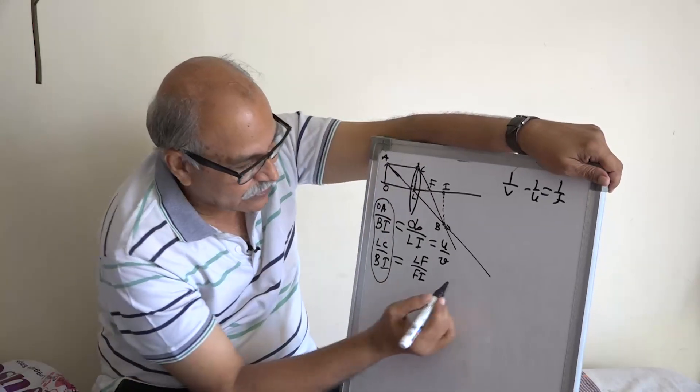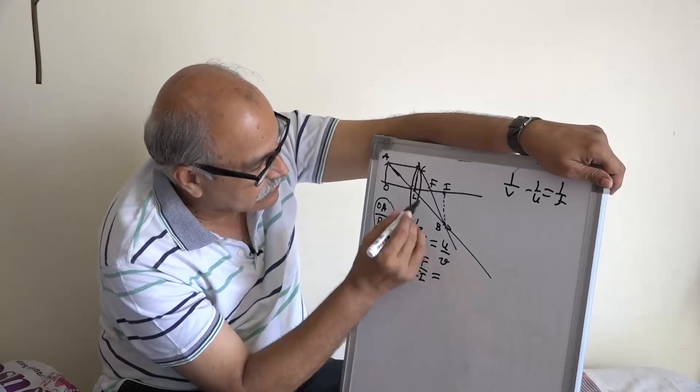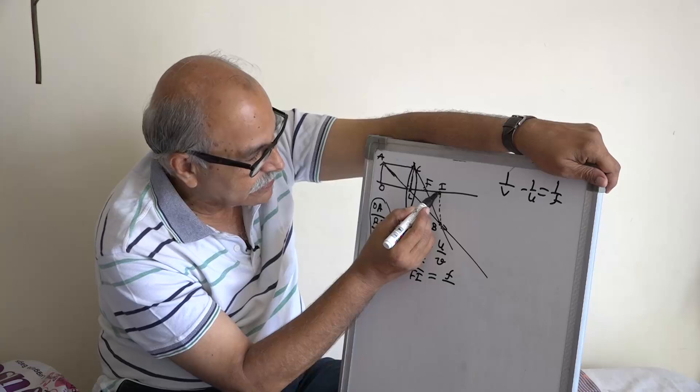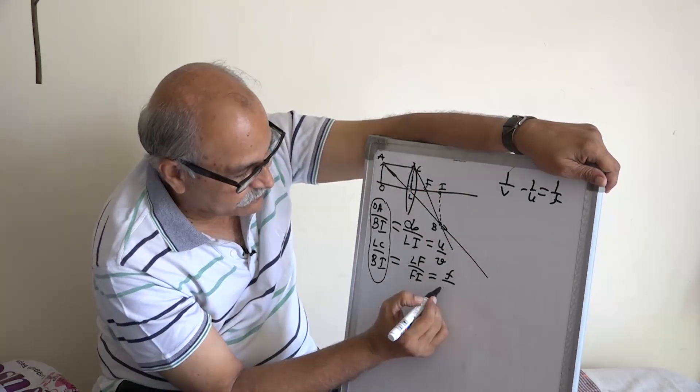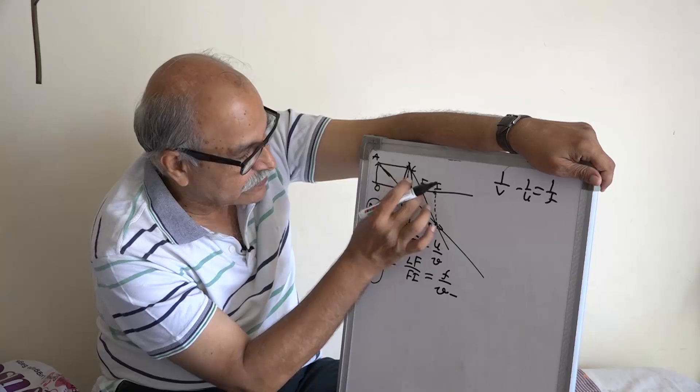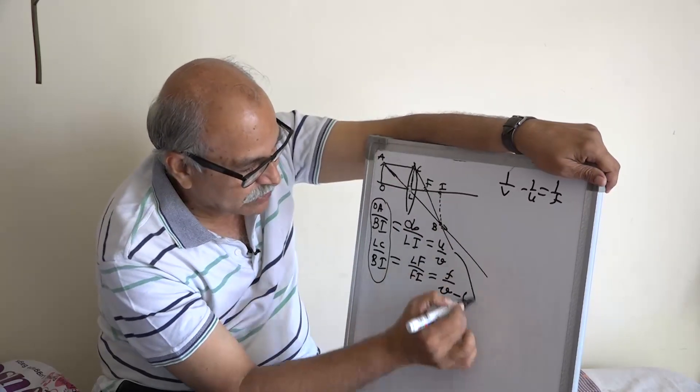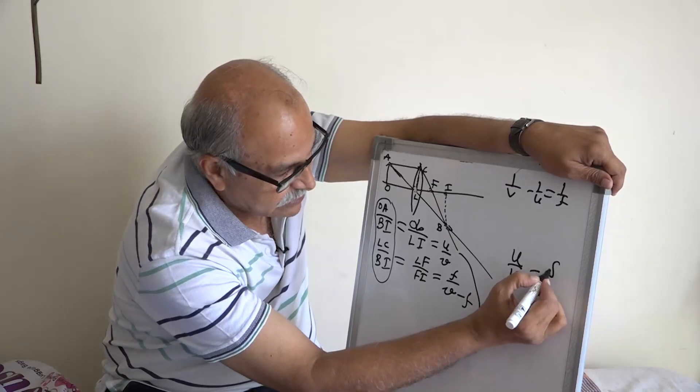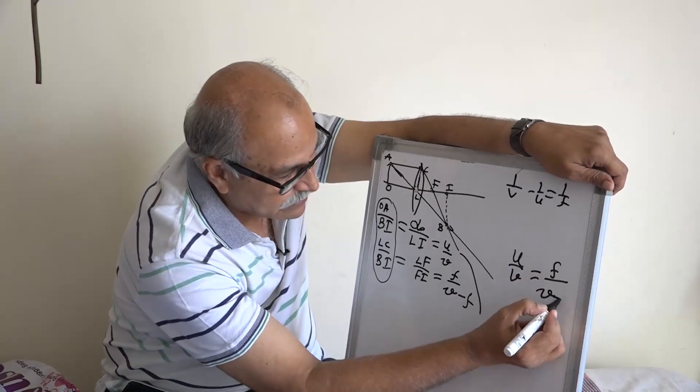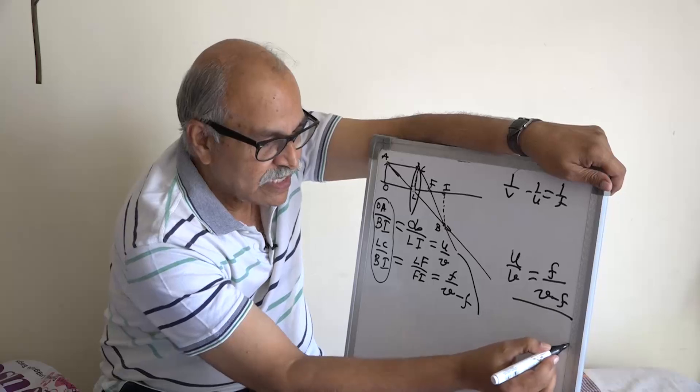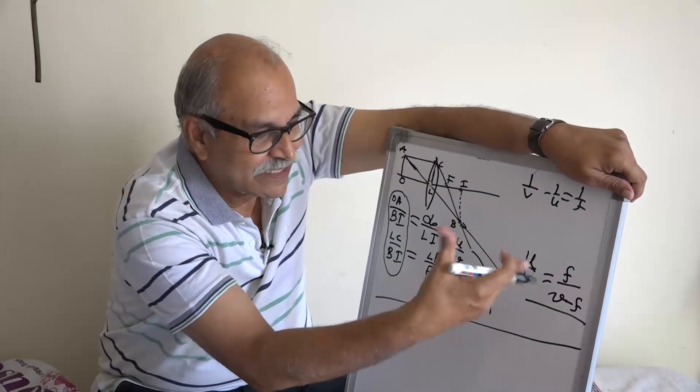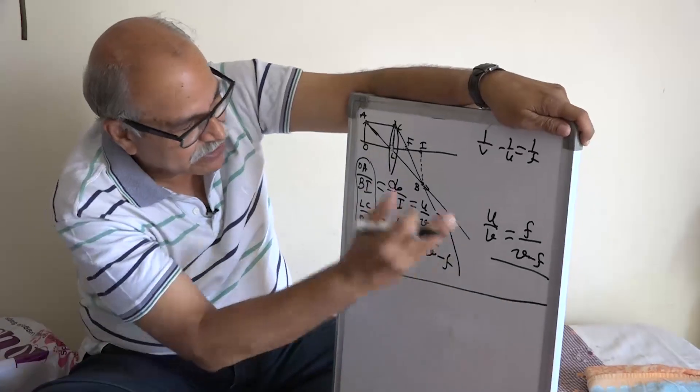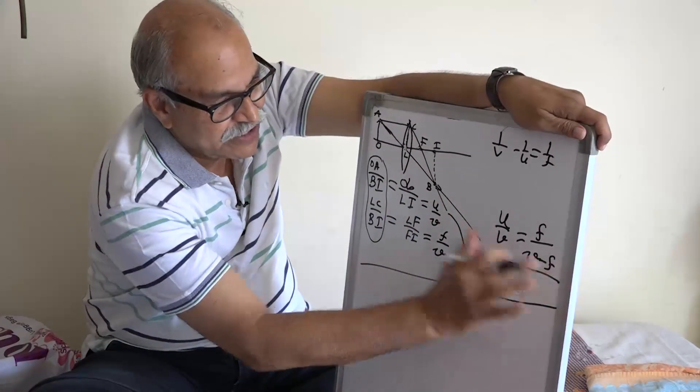L,F is F and what is F,I? F,I is this full distance which is V minus this which is F. From here you write u by V is equal to F divided by V minus F and then you can arrange in a more symmetrical manner.